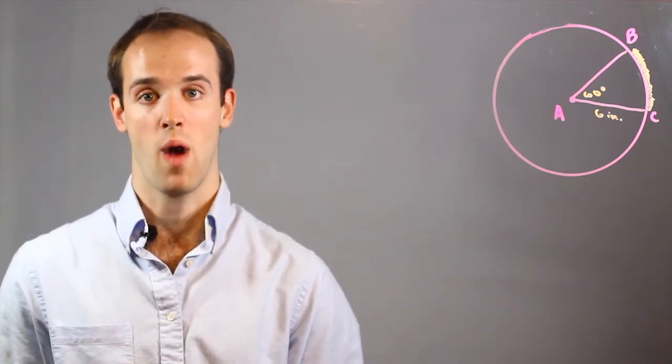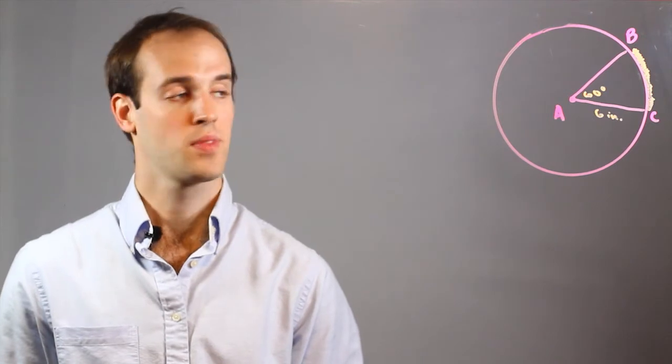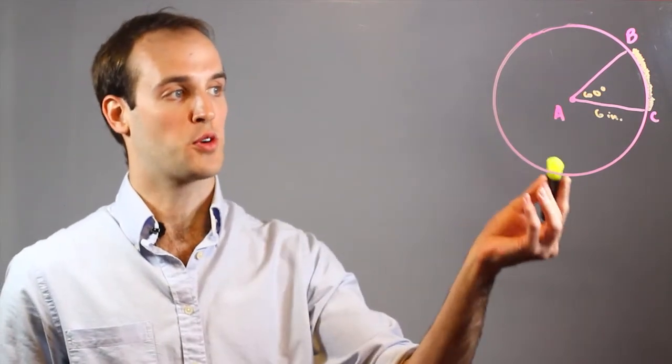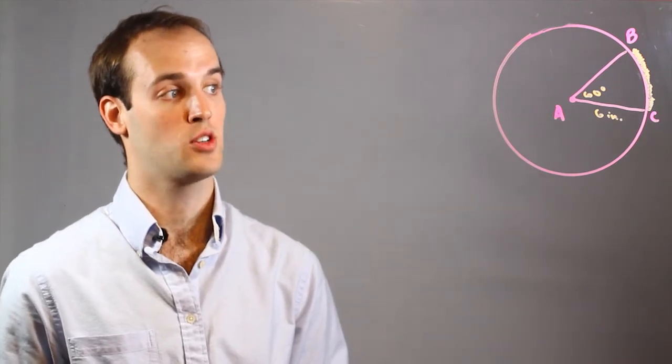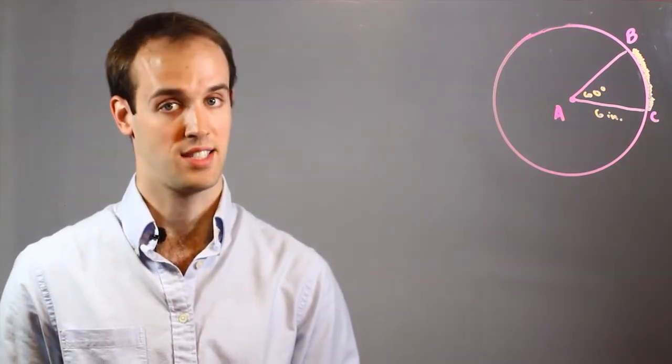And they can both be solved in the same way when given one or the other. Suppose we have circle A with arc BC, which has a measure of 60 degrees and a radius of 6 inches.